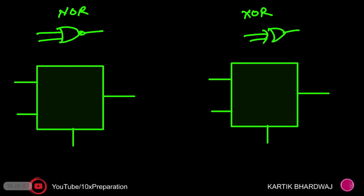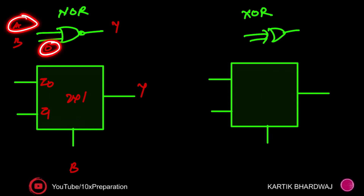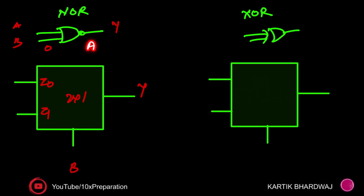Now for the NOR gate: again inputs a and b, 2x1 MUX, with b as the select line. I0 is at this input and I1 is at this input. When b is zero, a OR zero equals a, then NOT of a gives a-bar. When b is one, a OR one equals one, then NOT of that gives zero. So I0 is a-bar and I1 is zero for the NOR gate.